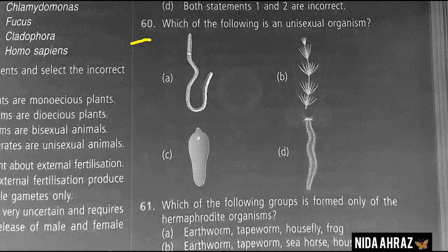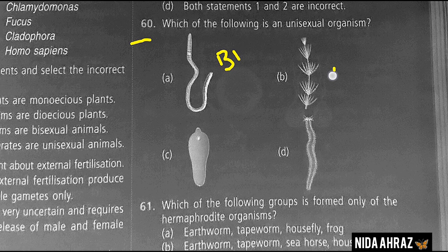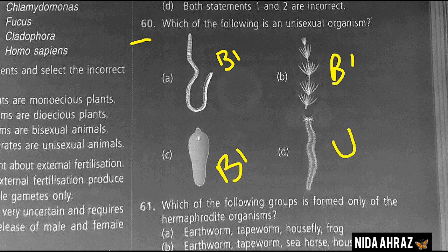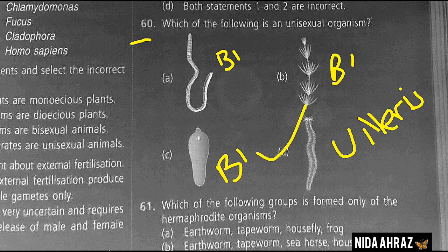Identifying which of the following is a unisexual organism: the answer is Nereis, which is unisexual or dioecious. Its reproductive phase is called Heteronereis. Option D is the correct choice.